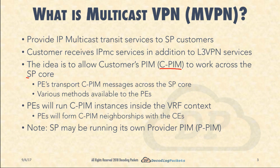The PE routers — provider edge routers — will transport CPIM messages across the SP core. How they do this is the nitty-gritty detail of mVPN. Sometimes it is tunneled, sometimes it is translated to a different sort of message. But there are various methods available to the PEs, all of which serve to get CPIM signaling across the SP core.